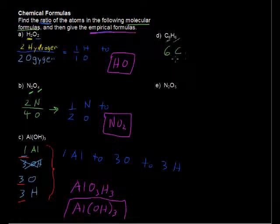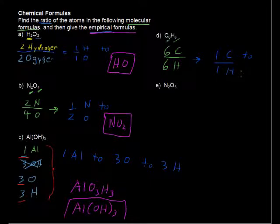We've got six carbon atoms for every six hydrogen atoms. So the ratio of those is one to one, one carbon to every one hydrogen. And so the empirical formula is just CH.